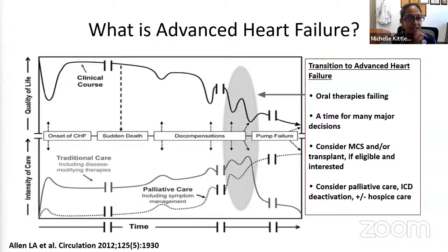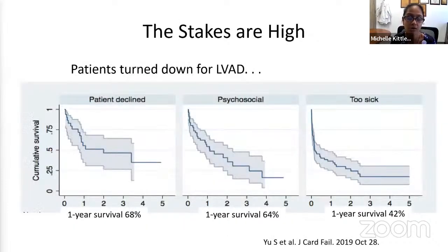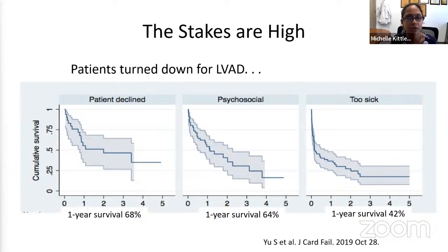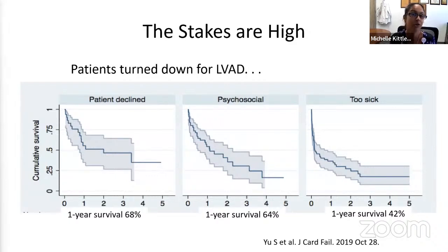When you have a patient with advanced heart failure, it's important to recognize that the stakes are high. Consider patients with advanced heart failure who present for consideration of a left ventricular assist device or LVAD — maybe they're declined for consideration. Those declined for psychosocial reasons, like poor adherence to medical therapy or lack of caregiver support, have a one-year survival of 64%. Those declined for medical contraindications have a one-year survival of 42%. So when I care for my patients with advanced heart failure, I recognize there are so many stressors and issues to discuss because the medical stakes are high and their prognosis can be very poor.